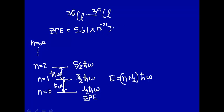Alright, so we know the zero point energy is 5.61 times 10 to the minus 21st joule and that's equal to 1 half h bar omega. So to figure out what this energy level spacing is, h bar omega, the energy level spacing, will just be twice that energy.